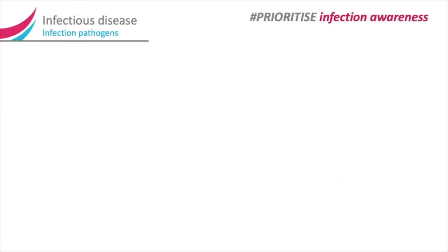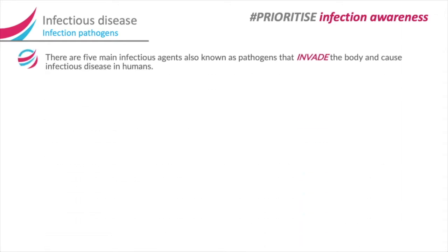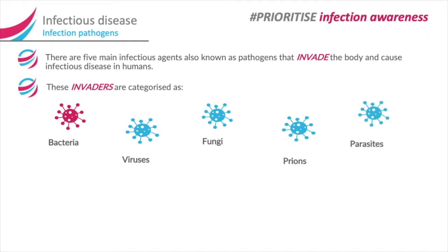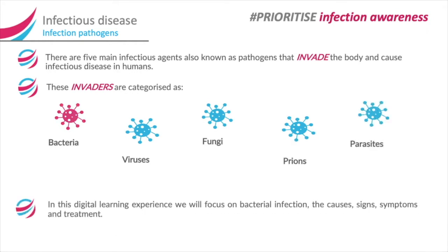Infectious disease — infection pathogens. There are five main infectious agents, also known as pathogens, that invade the body and cause infectious disease in humans. These invaders are categorised as bacteria, viruses, fungi, prions and parasites. In this digital learning experience, we will focus on bacterial infection — the causes, signs, symptoms and treatment.